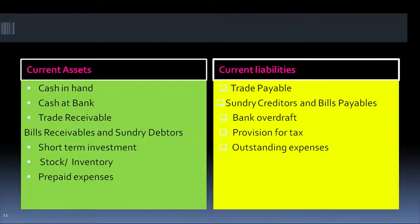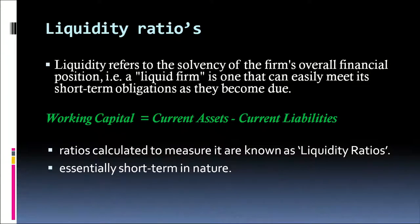Current liabilities include bills payable or trade payables, sundry creditors, bank overdraft, provision for tax, and outstanding expenses. Working capital is current assets minus current liabilities. In the liquidity ratio, we look at the proportion of current assets to current liabilities. We calculate current assets divided by current liabilities to get the current ratio, which indicates the amount of current assets available for repayment of short-term obligations. The ideal ratio is 2:1, but we benchmark it with the industry or competitors.